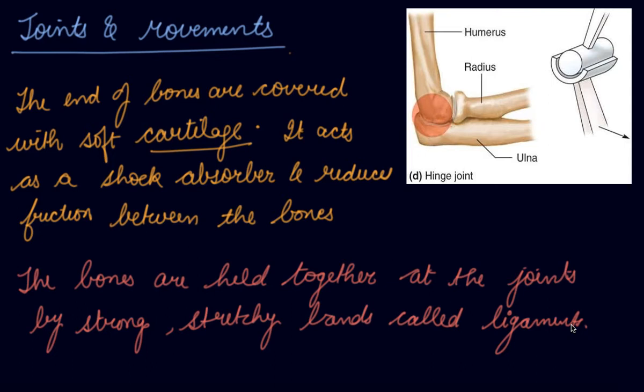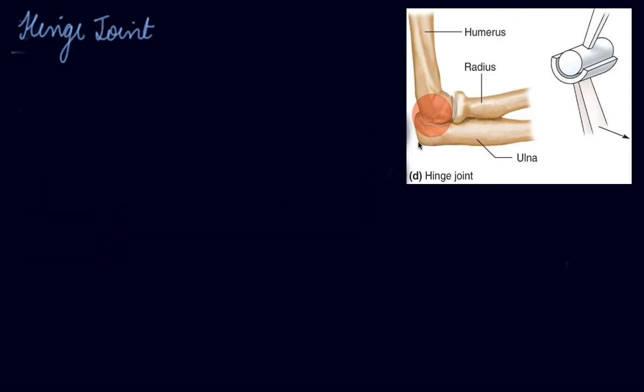Now let's study about some of the joints. Number one, we will study about the hinge joint. This type of joint that you can see a cup kind of thing and inside it there is another thing that is joining in it. This type of joint is your hinge joint in your body.